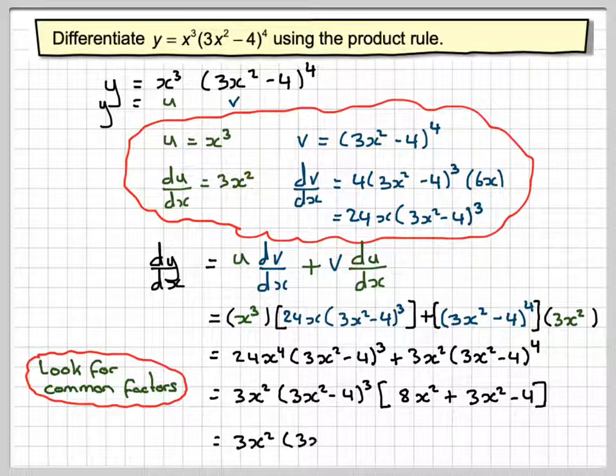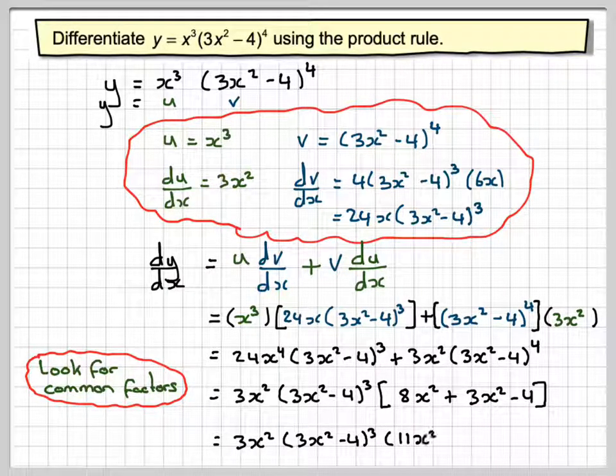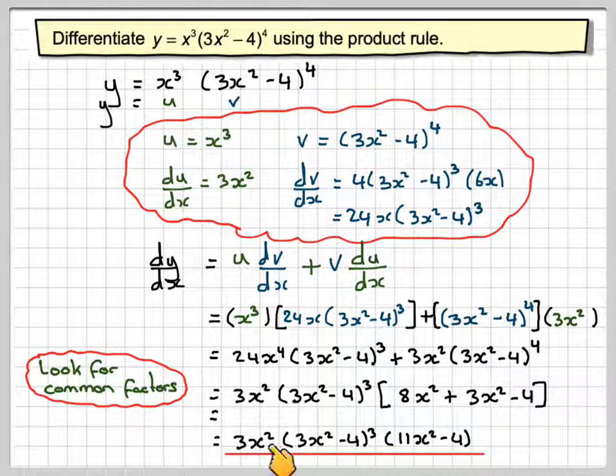Then the final line, 3x squared times 3x squared minus 4 to the power of 3. 8x squared plus 3x squared is 11x squared minus 4. And that's our final answer.